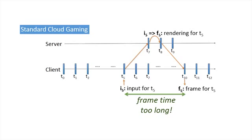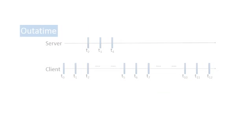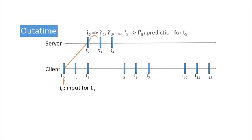To overcome Internet latency and deliver responsiveness, Out of Time employs speculative execution on the server and compensates for misspeculation on the client. The basic principle is to use statistical inference to speculatively generate possible output frames and transmit them to the client a full round trip ahead of the client's actual corresponding input.